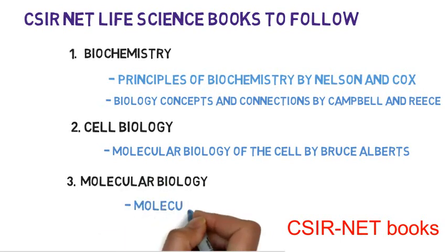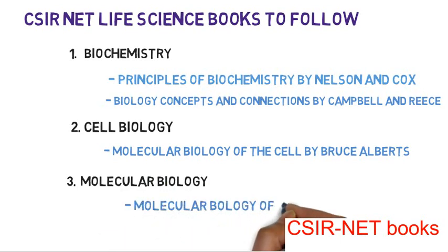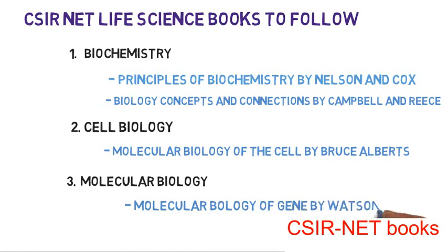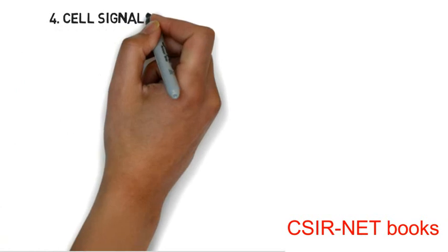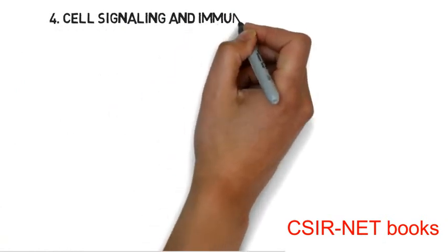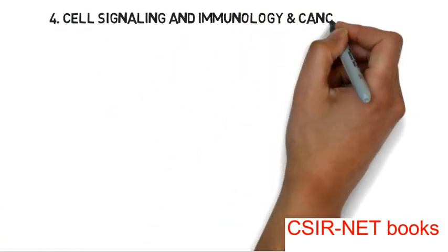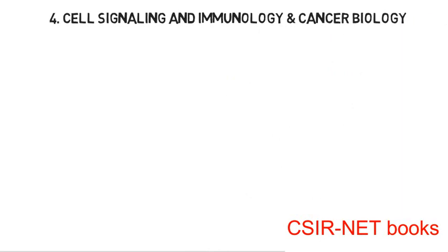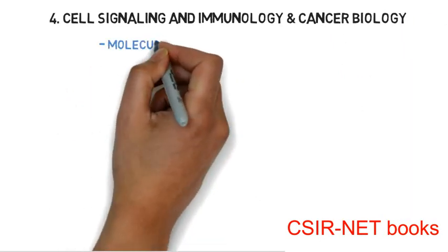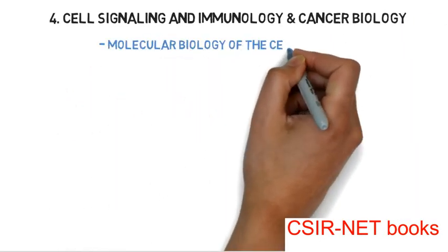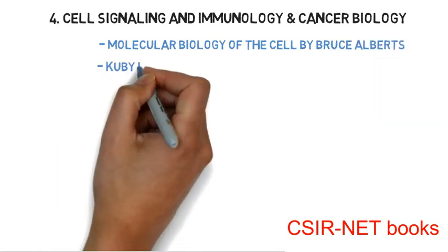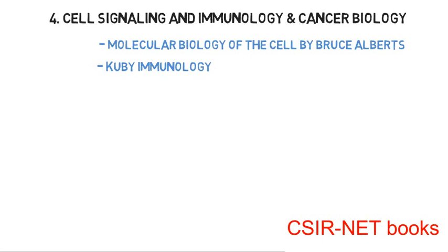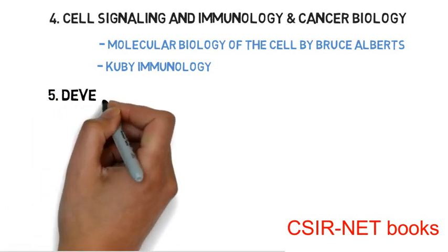For the fourth topic, that is cell signaling, immunology, and cancer biology, you have to follow Molecular Biology of the Cell by Bruce Alberts and the second book, Immunology by Kuby. These are good books.